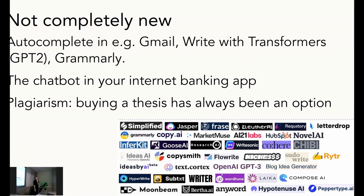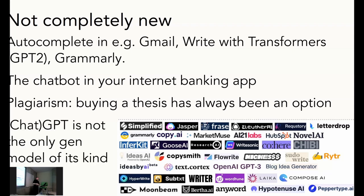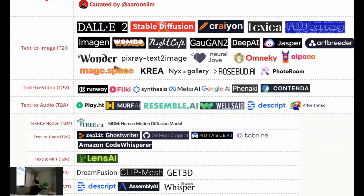Plagiarism is not new either — that's a question that comes up in academic contexts. There's always been an option: if you really don't want to write the thesis, you pay somebody. The difference now is that in the past you had to find somebody, pay them, get something back — but now you just click a button and you have something. ChatGPT is not the only generative model; there's a whole bunch of these things. Some are geared towards copywriting or specific applications. And there are all these other models: text-to-image, text-to-video, text-to-audio, and animation. We have a generative AI moment going on.